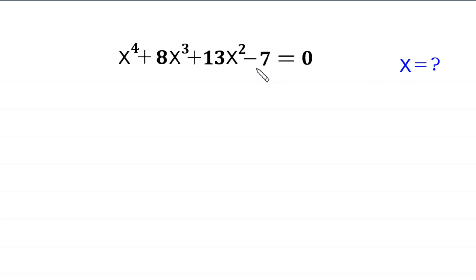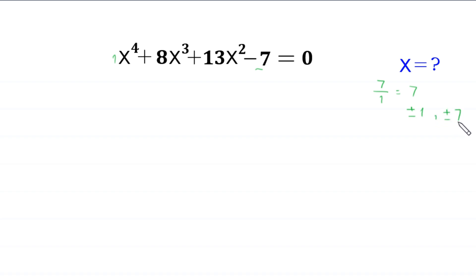If we divide this constant 7 by the coefficient of x to the power 4, which is 1, we get 7 divided by 1 equals 7, and the factors of 7 are plus or minus 1 and plus or minus 7. If we check plus or minus 1 in this equation, plus or minus 1 is not a solution. And if we check plus or minus 7, plus or minus 7 is not a solution. So let's use another trick.